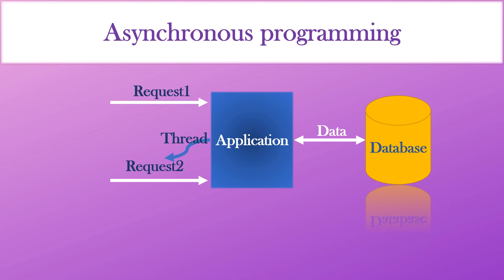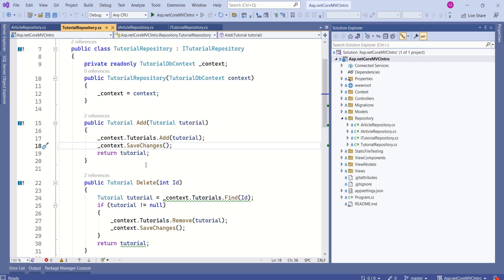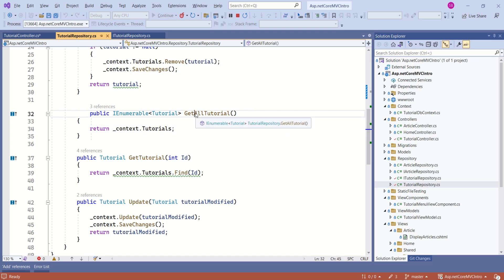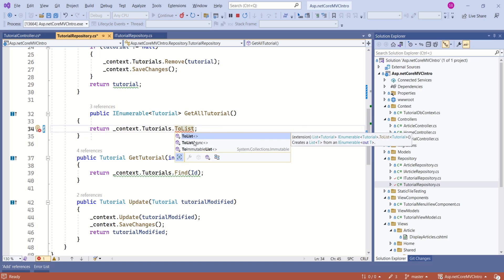It is not that the application will have a single thread — the application will have multiple threads, but this is how asynchronous programming works. To make the concept simple, I have taken an example of a single thread with two requests. In asynchronous programming, the async and await keywords play an important role. The best thing about Entity Framework Core is it supports asynchronous programming and it's very simple. To turn this method into an asynchronous method, first I will change this to toListAsync.